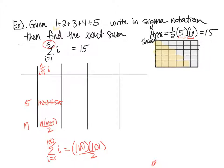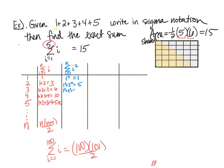Now I'll show you one more trick: how to add i squared. Then we'll go back to the very first problem and see how we could have solved it quickly. I don't have a cool visual for this one, but here's a nice approach. Let's write out the partial sums: for n equals 1 we get 1; for n equals 2, 1 squared plus 2 squared equals 5; for n equals 3, it's 14; n equals 4 gives 30; and n equals 5 gives 55.